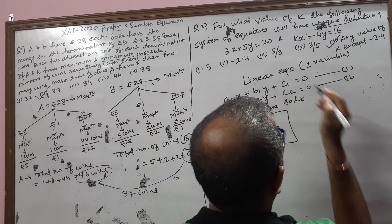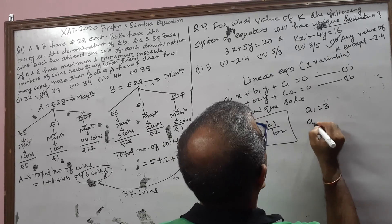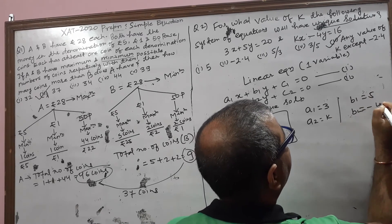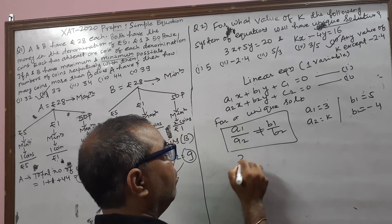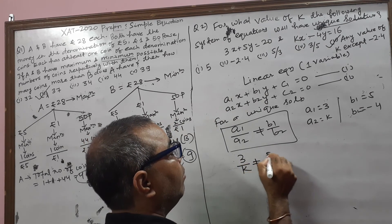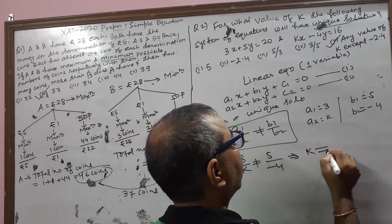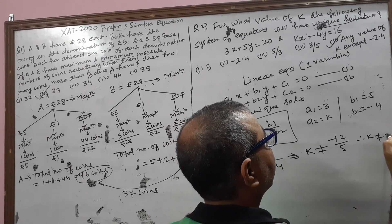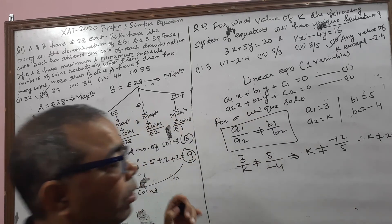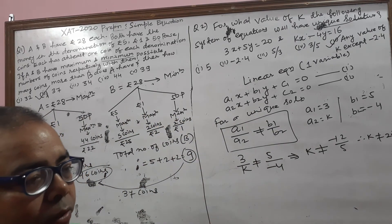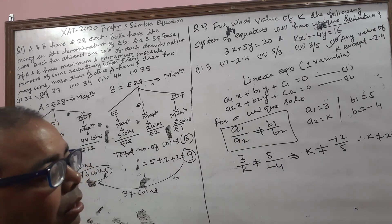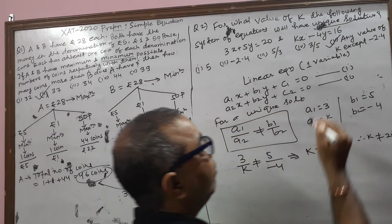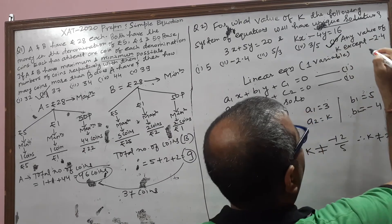So if you find out this equation: A1 equals 3, A2 equals K, B1 equals 5, and B2 equals minus 4. Simply putting here: 3 by K is not equal to 5 by minus 4. This implies that K is not equal to — cross multiplying — minus 12 by 5. Therefore K is not equal to minus 2.4. So we are finding that K should not be equal to 2.4. Any value of K except 2.4 is the answer.